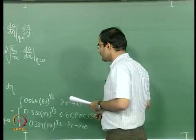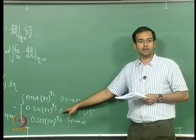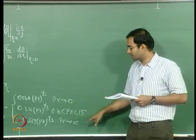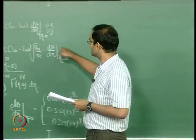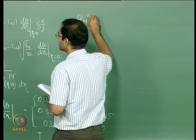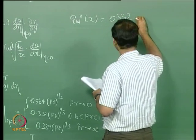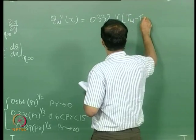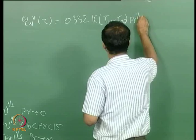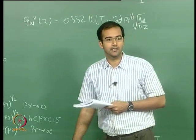Most of the time we are interested in fluids with intermediate Prandtl numbers, not liquid metals or extremely high-viscosity fluids. For intermediate Prandtl numbers between 0.6 and 15, we take that value and substitute for dθ/dη to calculate the heat flux. Therefore the wall heat flux becomes: q″_wall = 0.332·k·(T_wall−T∞)·PR^(1/3)·√(u∞/νx). This is the equation for the wall flux.